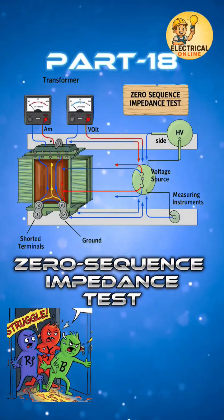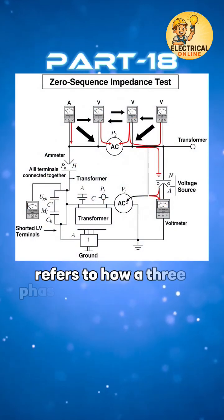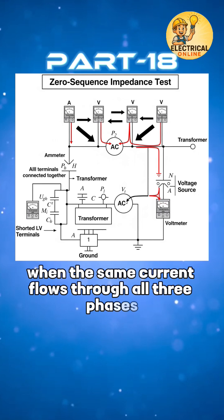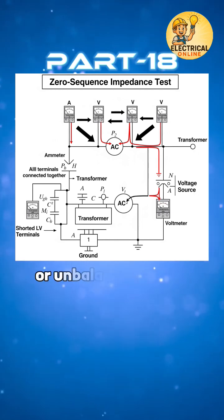In transformer test series, the 18th one is zero sequence impedance test. Zero sequence impedance refers to how a three-phase transformer reacts when the same current flows through all three phases in the same direction, a condition that can occur during earth faults or unbalanced loads.